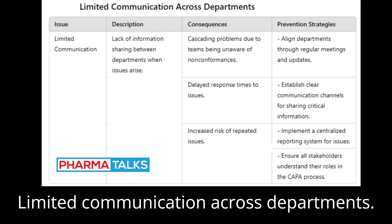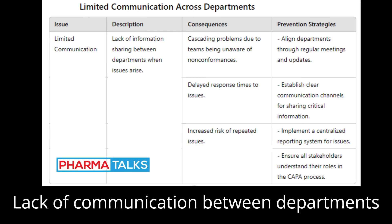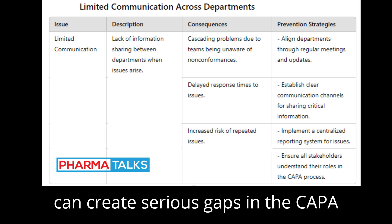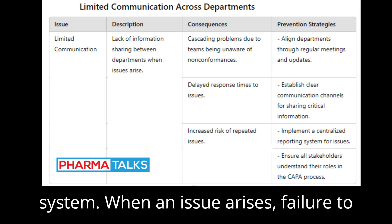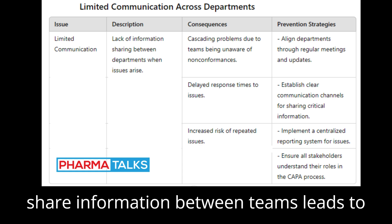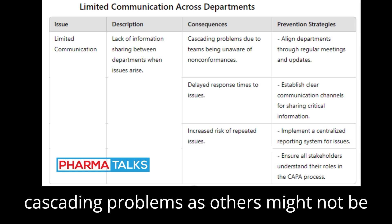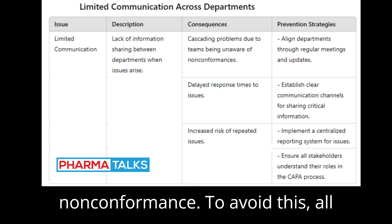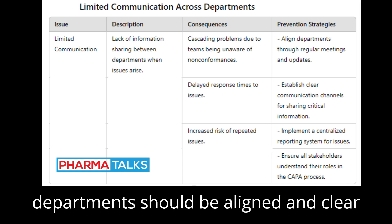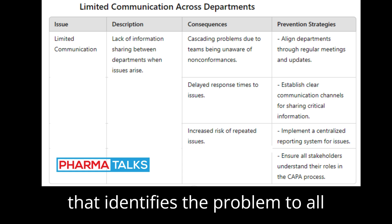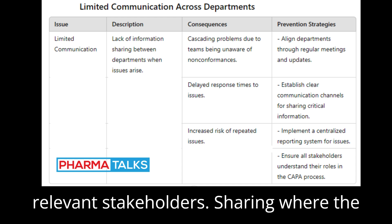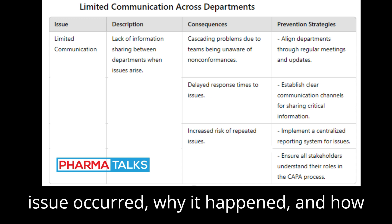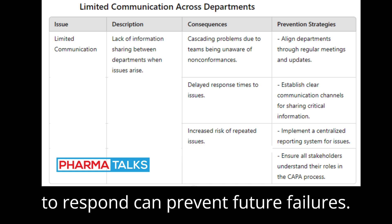Problem 1: Limited Communication Across Departments. Lack of communication between departments can create serious gaps in the CAPA system. When an issue arises, failure to share information between teams leads to cascading problems, as others may not be aware of or prepared to respond to the nonconformance. All departments should be aligned, with clear information flowing to all relevant stakeholders — sharing where the issue occurred, why it happened, and how to respond.